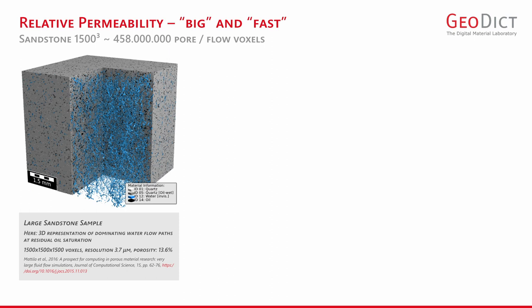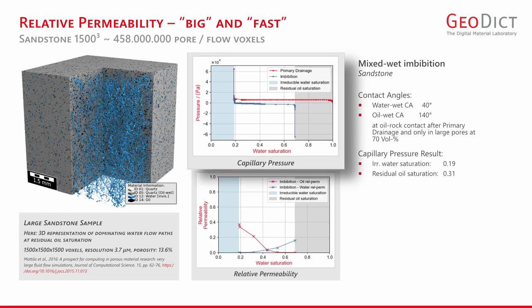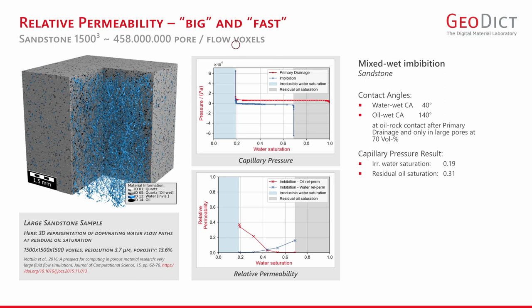The image on the left represents the digital sandstone with the dominating water flow path at residual oil saturation, at the endpoint of the forced imbibition. The capillary pressure curve shows the primary drainage in a water-wet setup and the subsequent imbibition in a mixed-wet setup. In between those two computations, oil-wet quartz grain surfaces were introduced based on both the oil-phase distribution of the primary drainage and the presence of large pores. By computing spontaneous imbibition and the subsequent forced imbibition, we can digitally extract more oil from mixed-wet digital rocks.